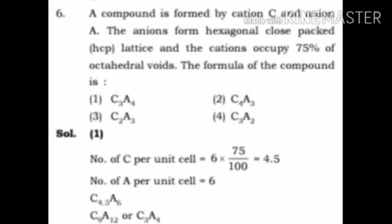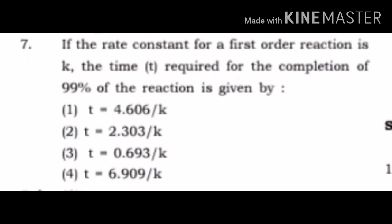In HCP lattice unit cell, number of A per unit cell equals 6. C occupies 75% of octahedral voids, so C:A ratio is 4.5:6 or 9:12, which simplifies to C3A4. The correct choice is option 1.